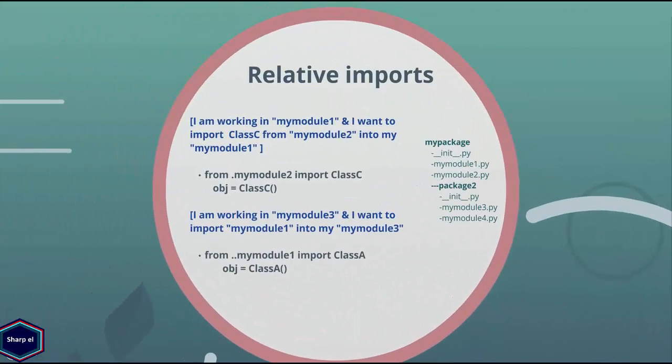Relative imports are basically a way of saying find a class, function, or module relative to the current module. Let's suppose I have two modules in my package, MyModule1 and MyModule2. Suppose I am working in MyModule1 and I want to import class A from MyModule2. So I can use import statement with dot operator as shown in the example.